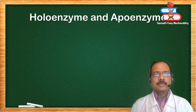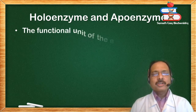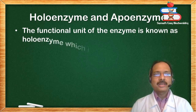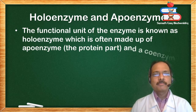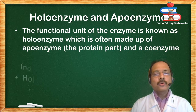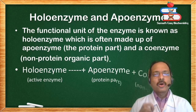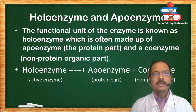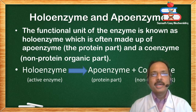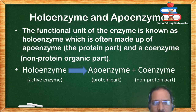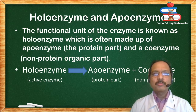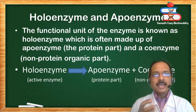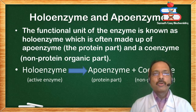Holoenzyme and apoenzyme: the functional unit of the enzyme is known as holoenzyme, which is often made up of apoenzyme, the protein part, and coenzyme, i.e. the non-protein organic part. So the active enzyme, holoenzyme, is made up of apoenzyme plus coenzyme. Apoenzyme is the protein part, coenzyme is the non-protein part, and together they constitute the active functional enzyme known as holoenzyme.